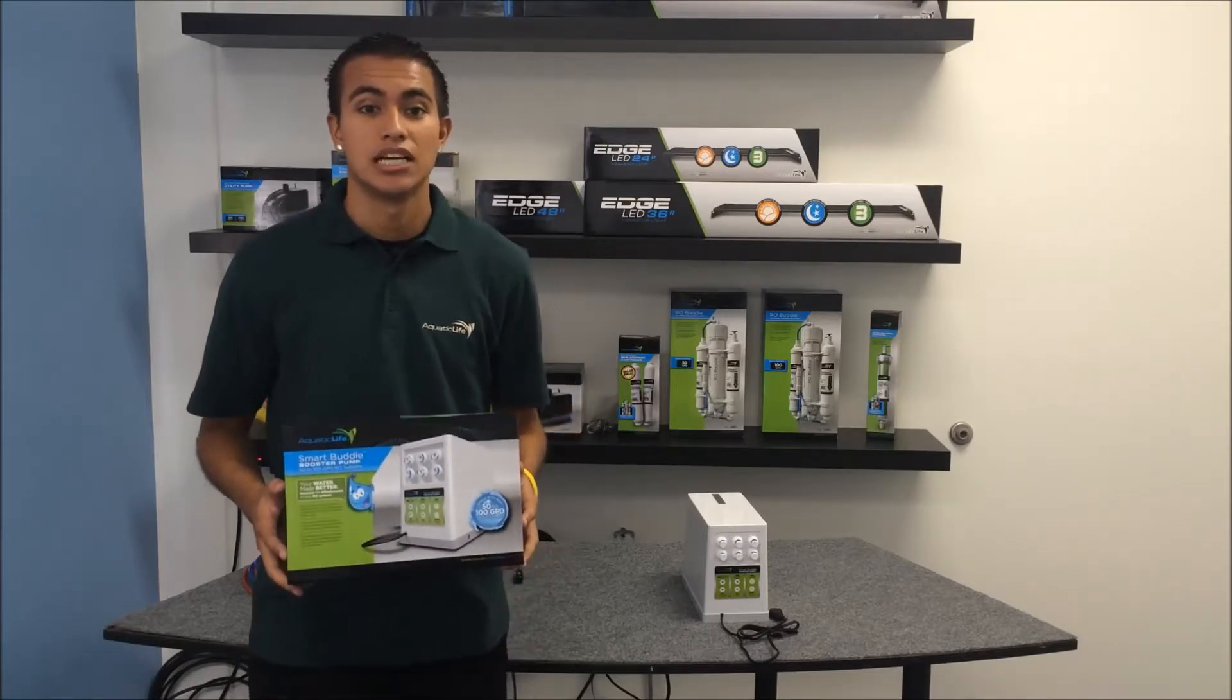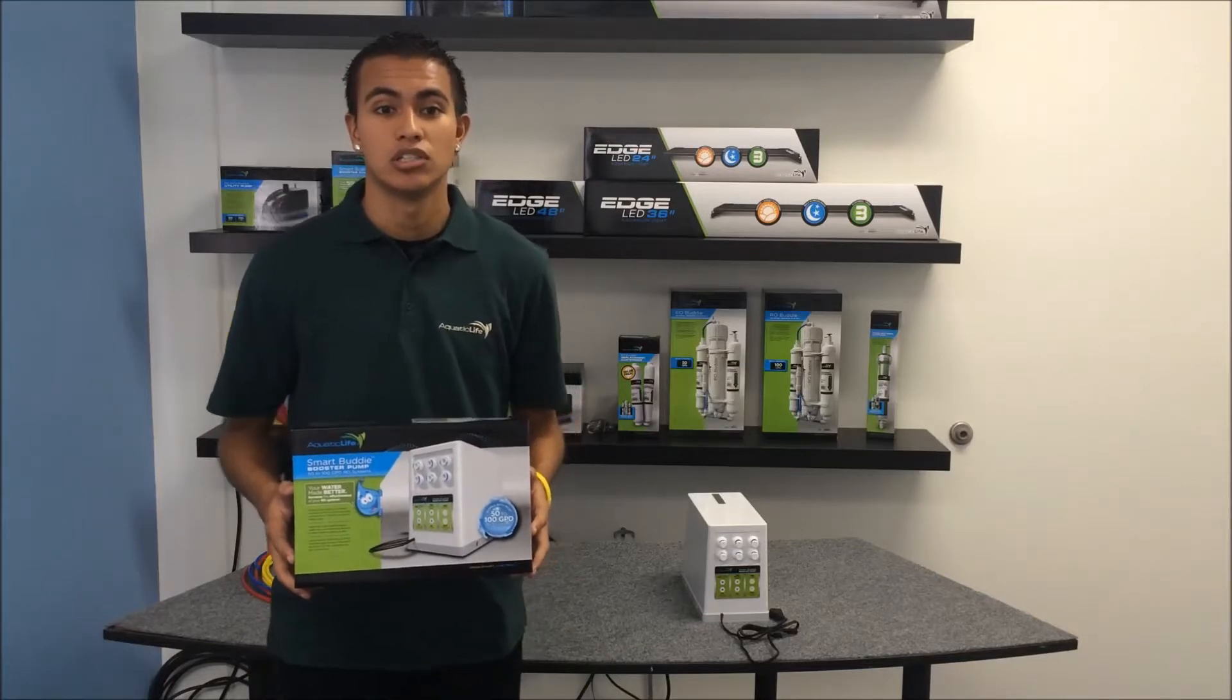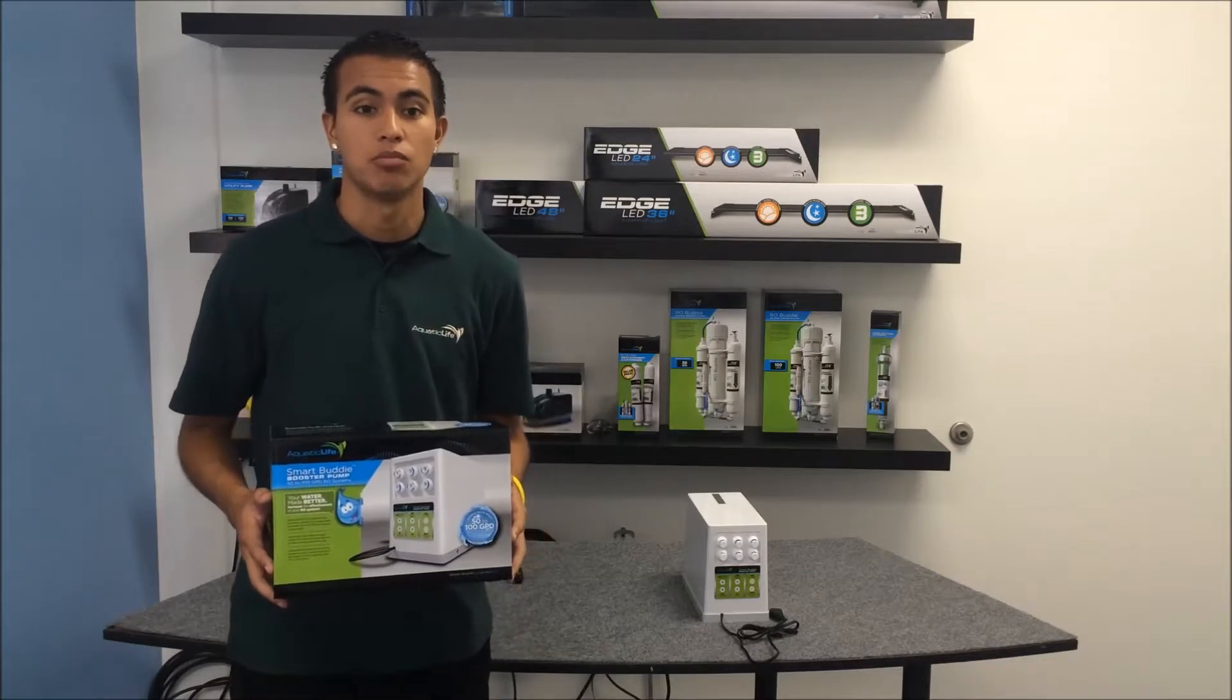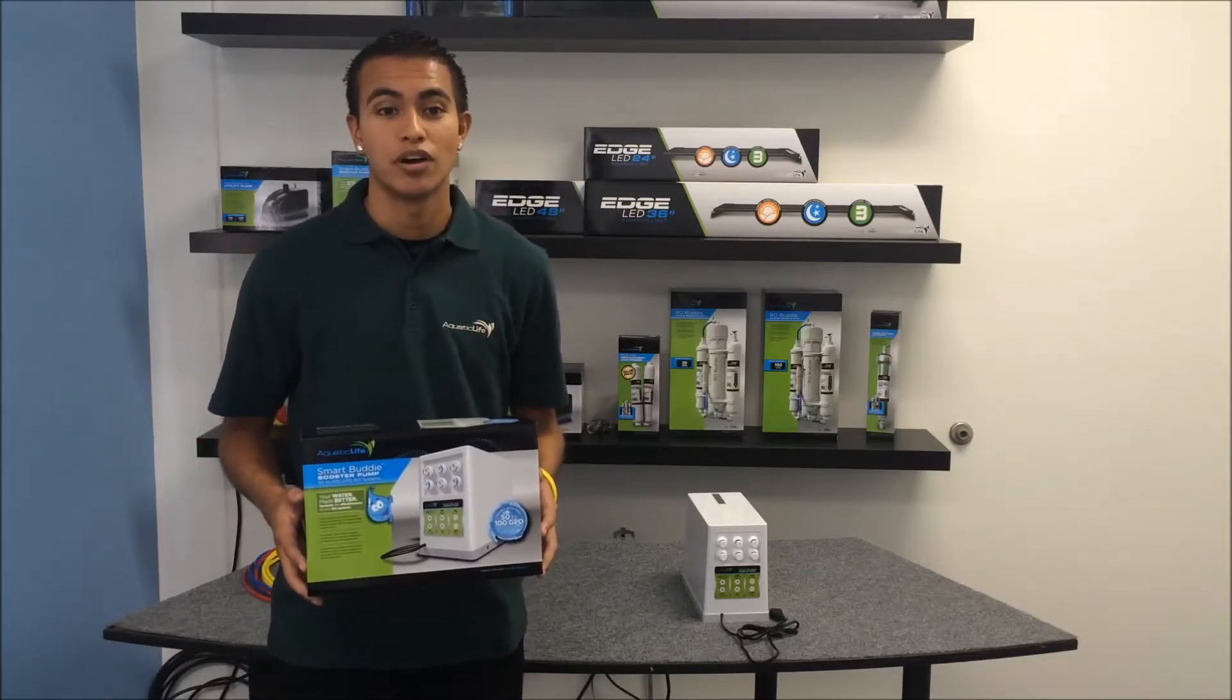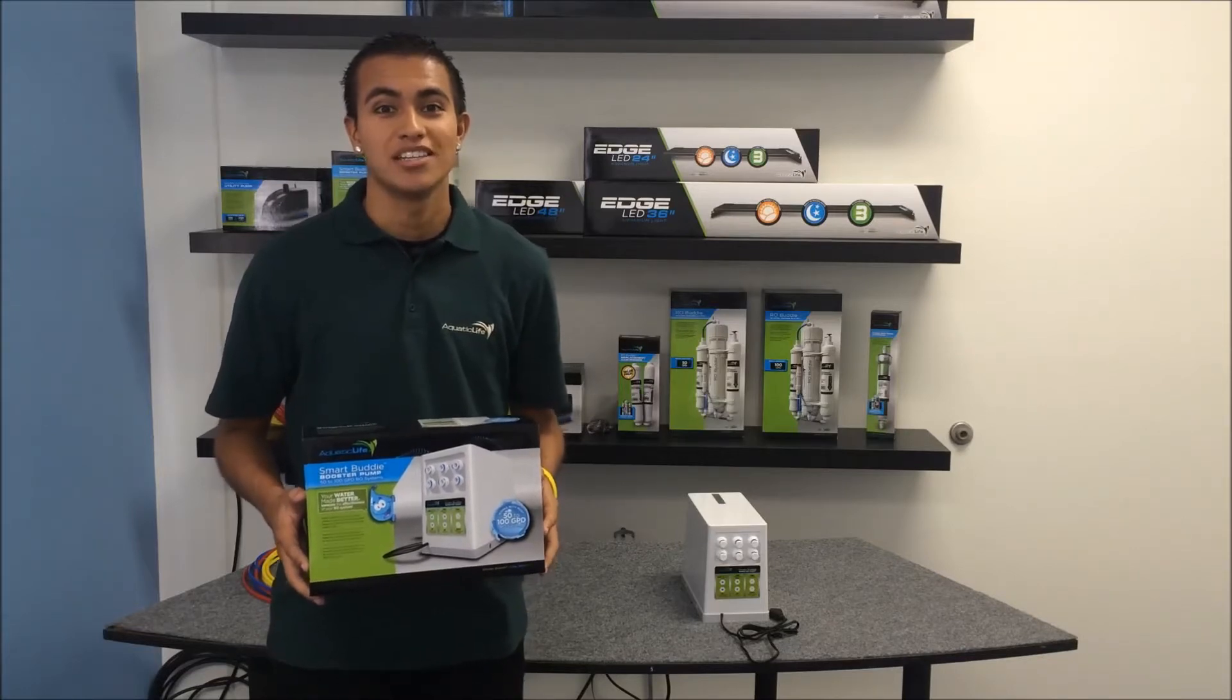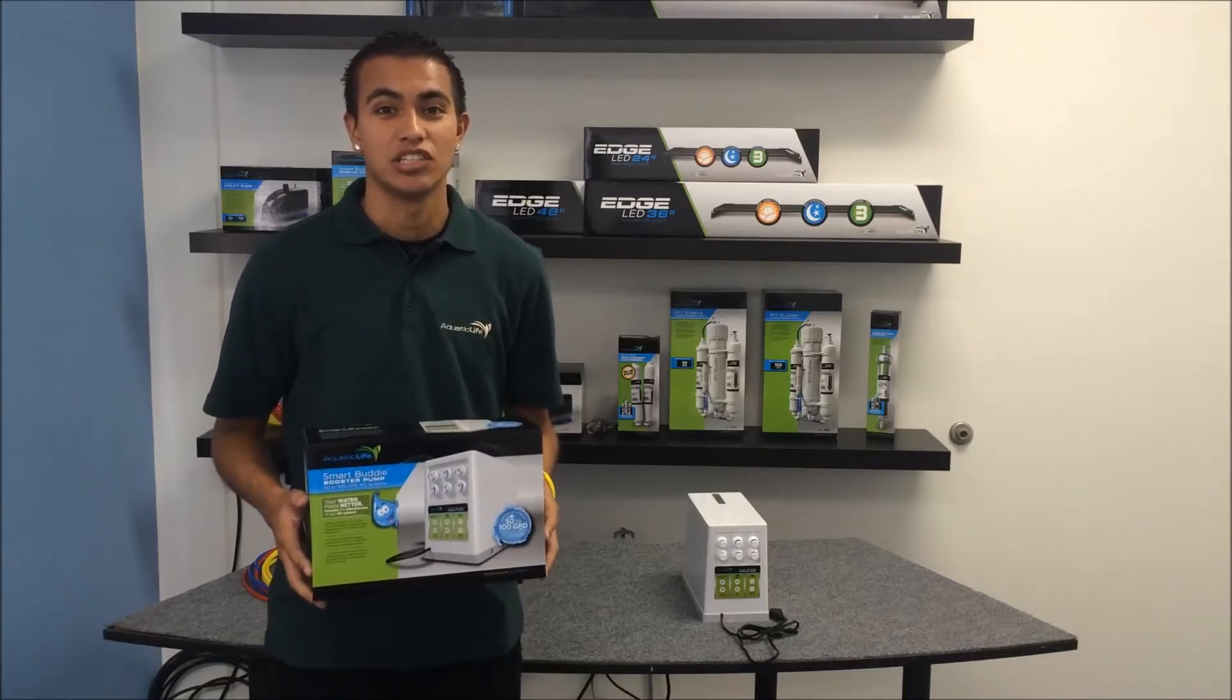The Smart Buddy is designed to be an accessory to most 50 to 100 gallon per day RO units in areas with low water pressure or for users that want maximum output and the best quality filtered water from their RO system. The Smart Buddy Booster Pump is quiet, easy to install, and can significantly increase water output.